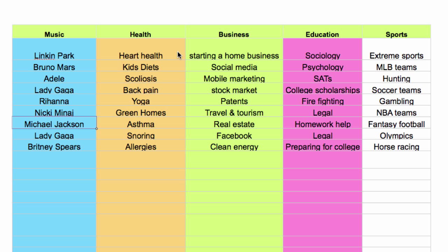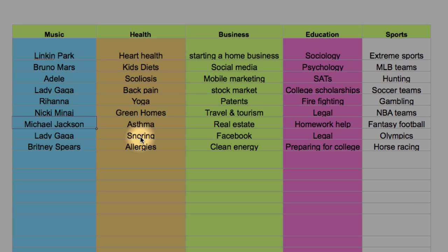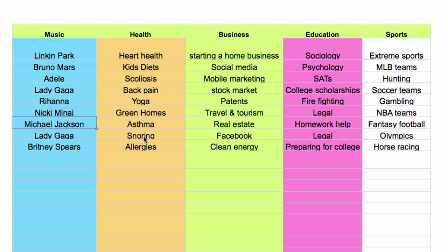For instance, if you go to the Health category and see there are no apps about snoring, or just very few, that is a green light to create an app about snoring or another underserved topic.